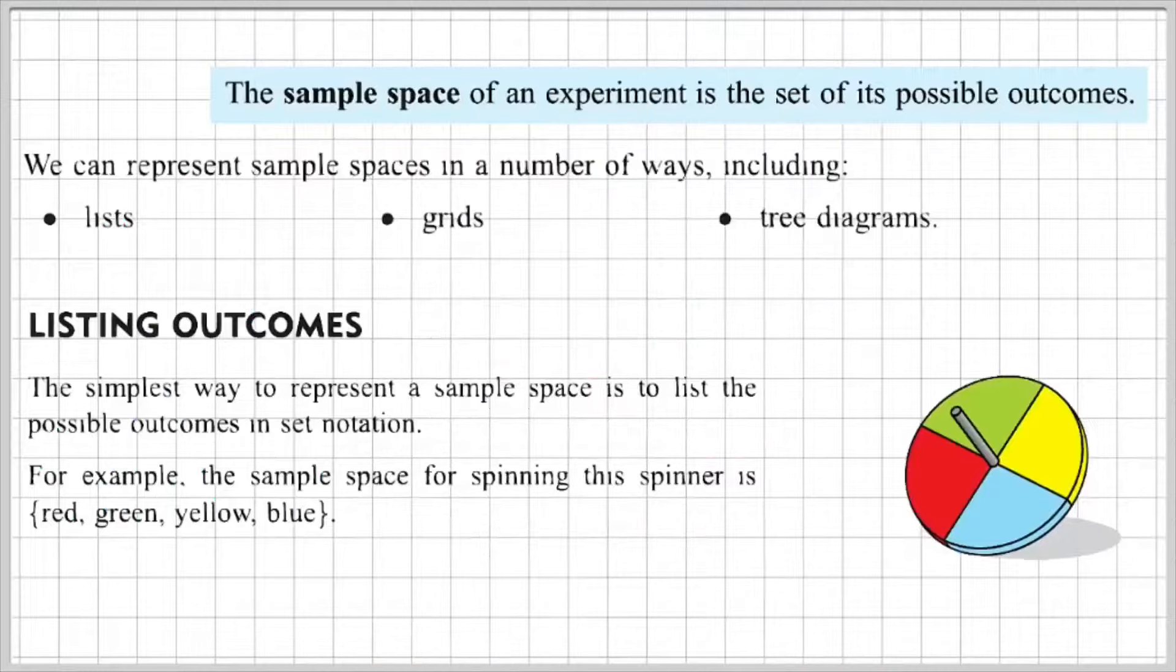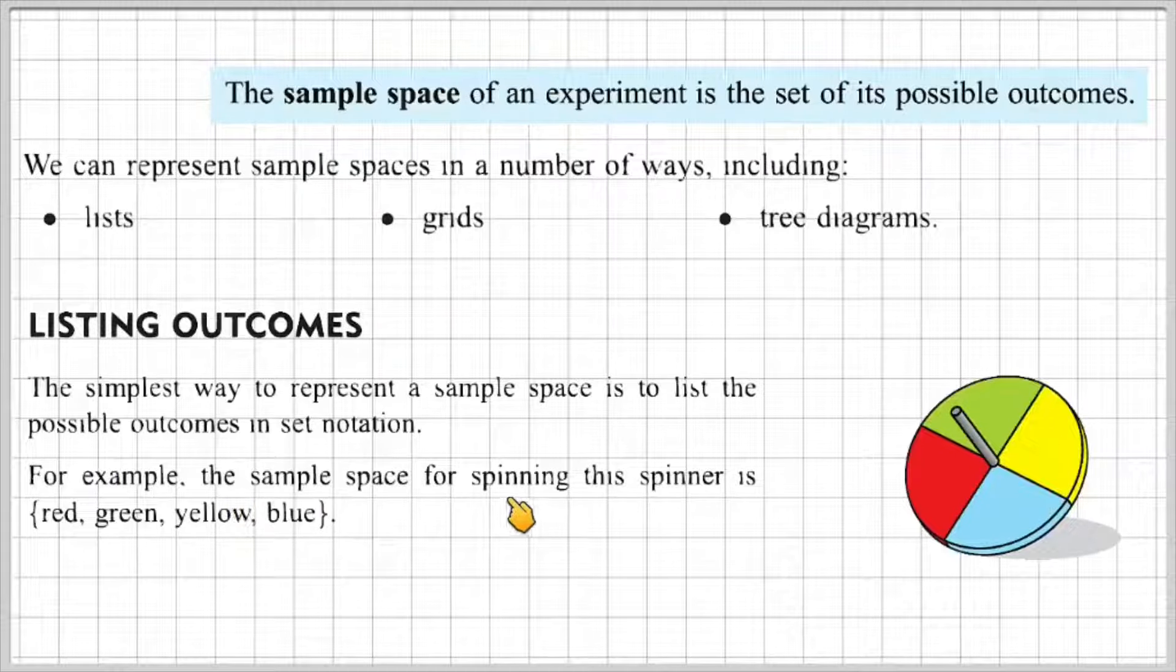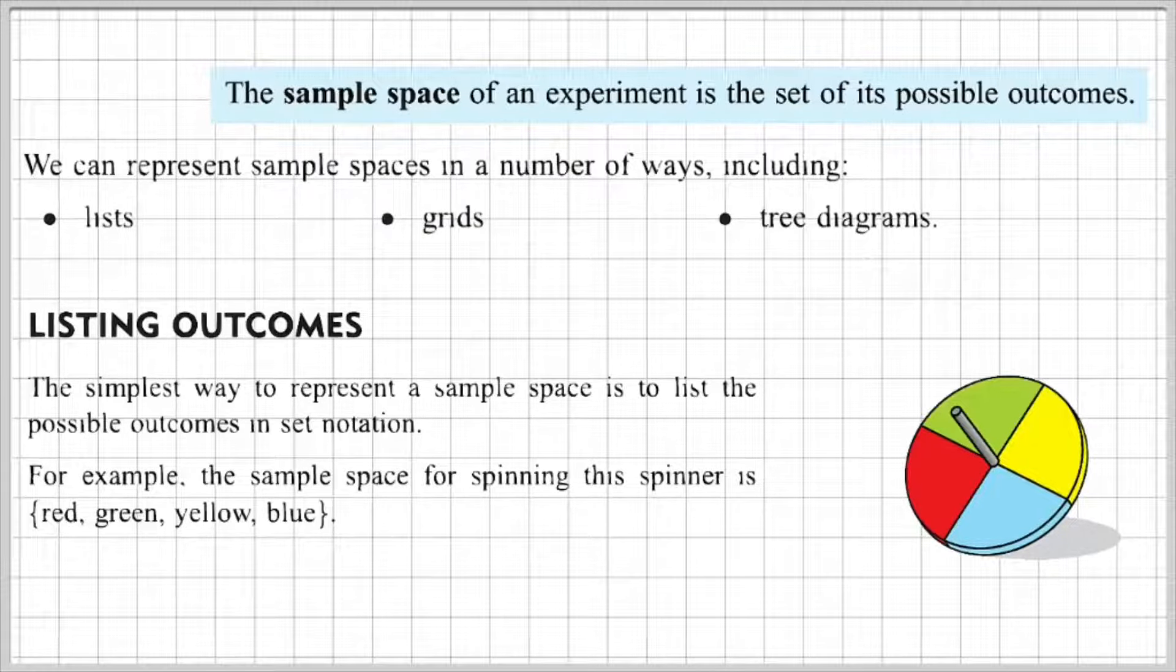The first method is listing outcomes. The simplest way to represent a sample space is to list the possible outcomes in set notation. For example, the sample space for spinning this spinner is red, green, yellow and blue because those are the possible outcomes on this particular spinner.